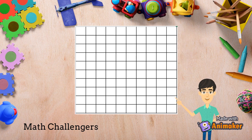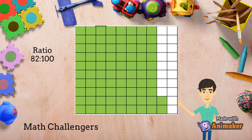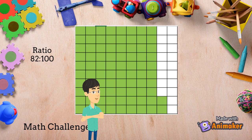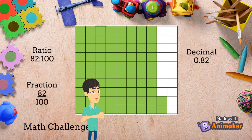We can express the correct answer as a ratio, which is 82 is to 100. We can also express it as a fraction, which is 82 over 100. Or as a decimal in the form of 82 hundredths. And we can also express it as a percent, which is 82%.